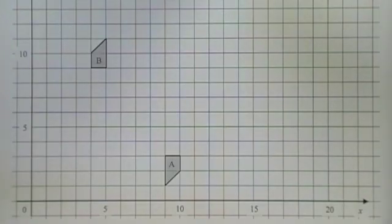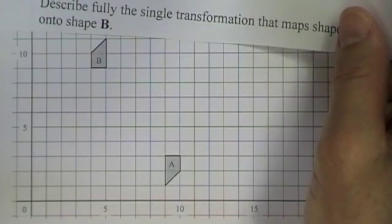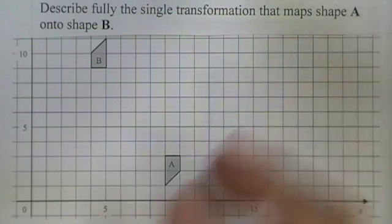Here we are given a grid with two shapes on it. And the question asks us to describe fully the single transformation that maps shape A onto shape B. First thing we have to do is recognize what type of transformation. This one's pretty obviously a rotation.